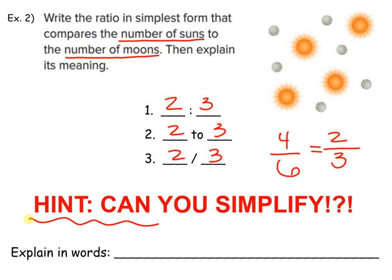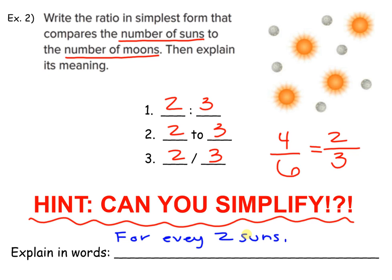We already went ahead and simplified it before we wrote our ratios out. What is the meaning of this ratio? For every two suns, there are three moons. And it's as simple as that.